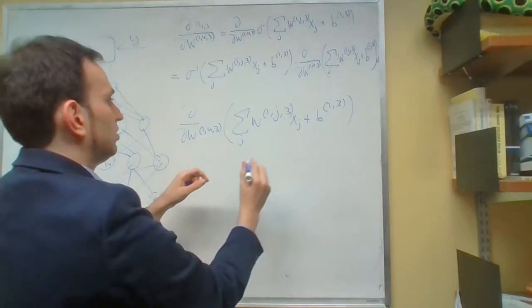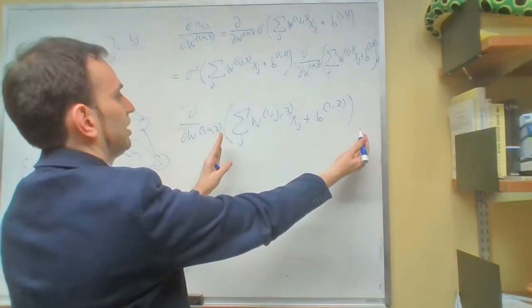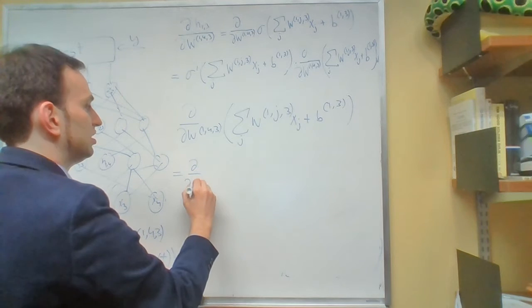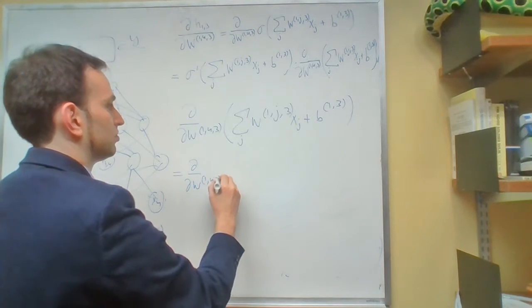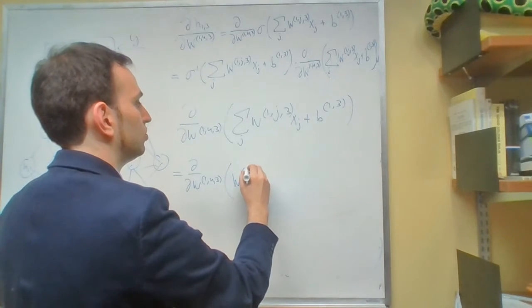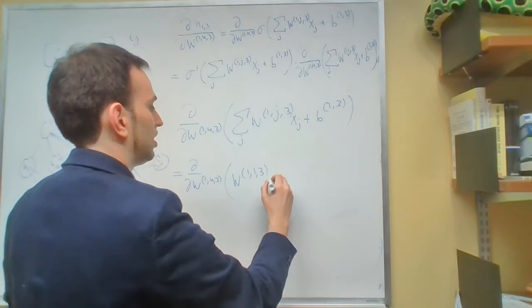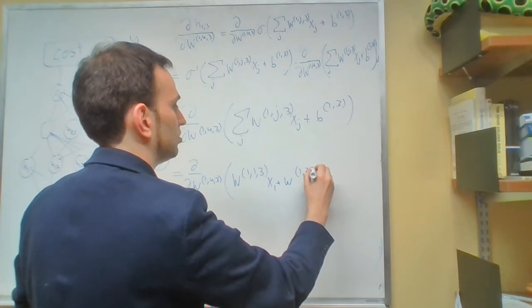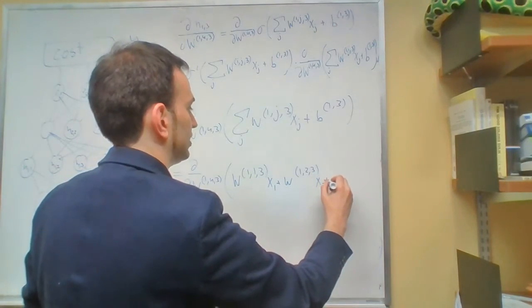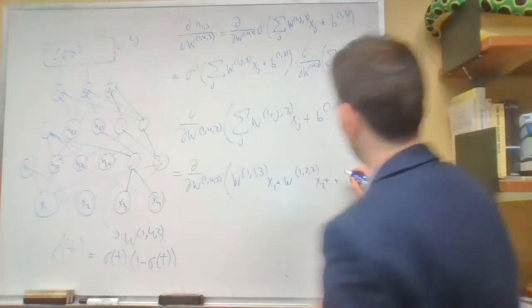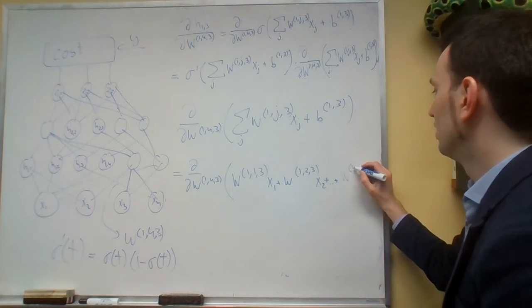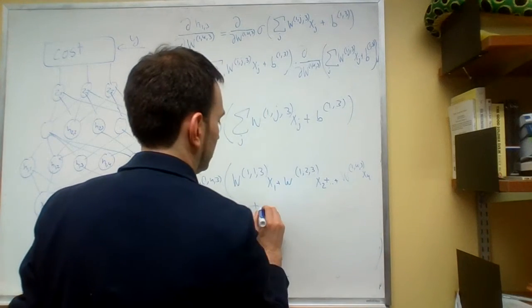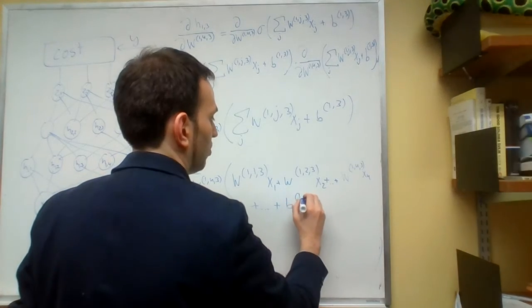How would that work? One way to kind of understand it is to just expand this sum. So this would be equal to d by dw143 of w113 times x1 plus w123 times x2 plus and so on, plus w143 times x4 plus and so on plus b13.